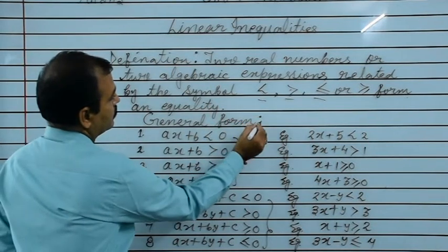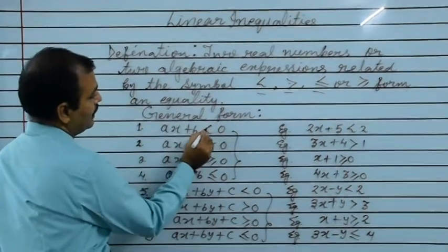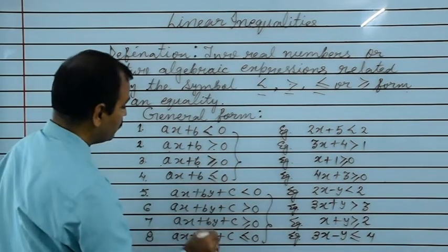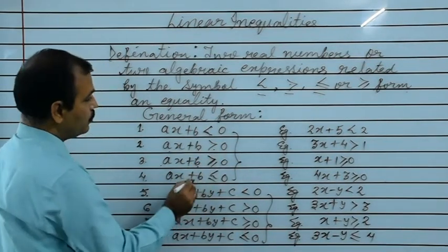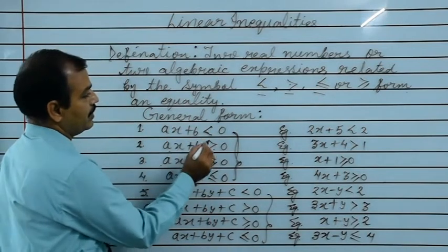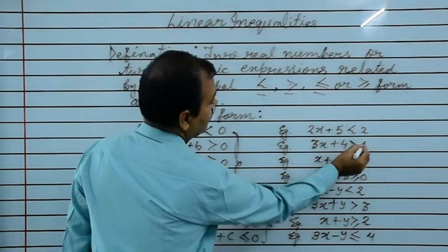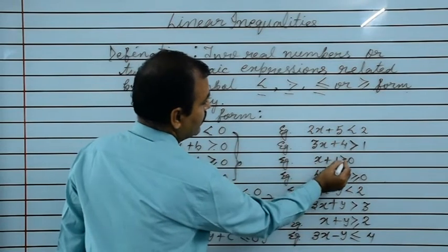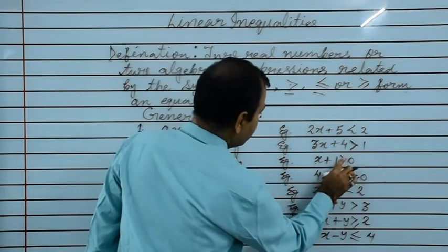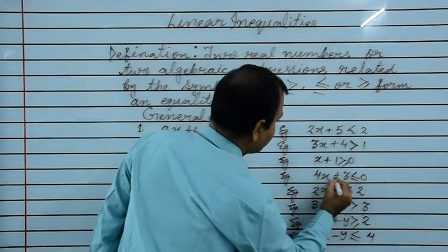General form. First, linear inequality in one variable: ax plus b is less than 0, ax plus b is greater than 0, ax plus b is greater than equals to 0, ax plus b less than equals to 0. These are the general forms of linear inequality in one variable. Examples: 2x plus 5 is less than 2, 3x plus 4 is greater than 1, x plus 1 is greater than equals to 0, 4x plus 3 less than equals to 0.